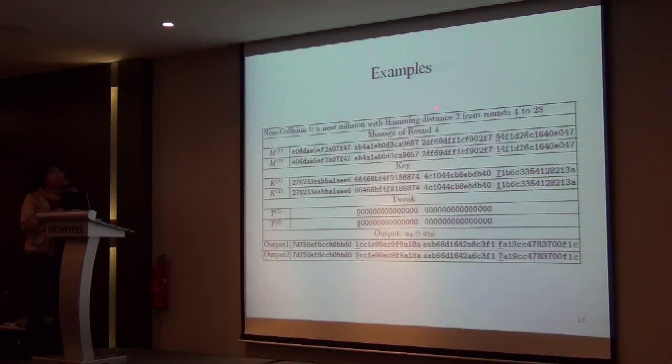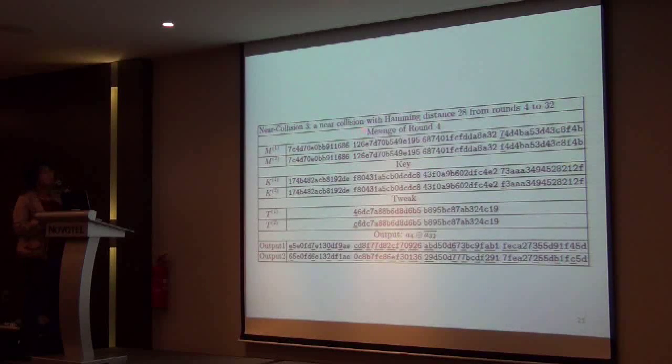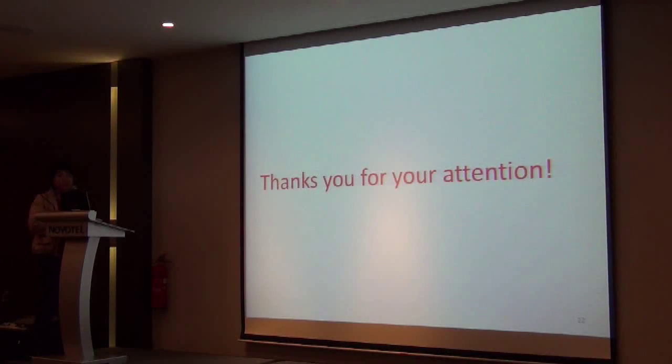In order to verify our differential path, we give three examples. The first example is a near-collision with Hamming weight only 2, from rounds 4 to 28. In this example, the tweak is fixed. In fact, it can be any arbitrary values except the difference in the most significant bits. This is a collision example from rounds 0 to 28, and the tweak is a selected tweak. This is a collision from rounds 4 to 32. Thank you for your attention.